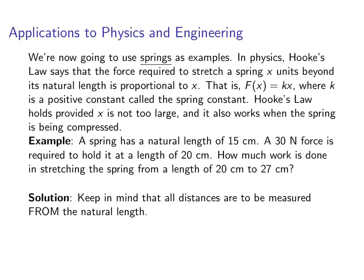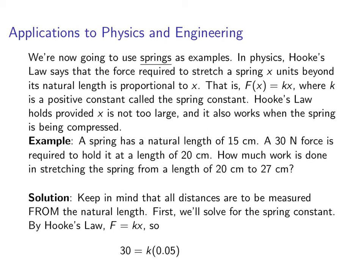Now keep in mind that all the distances need to be measured from the natural length. So let's first solve for the spring constant. Hooke's Law tells us that force is equal to k times x. So we're told that it's a 30 Newton force and that the distance is 0.05 meters. We should be measuring everything in meters. Solve for k and we get 600.